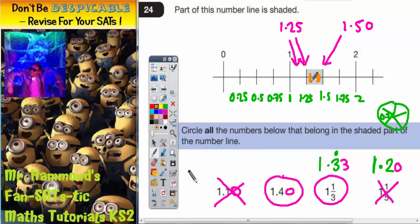First third would be about there. Second third would be about there. So 1.1 would be in the grey gap. 1.2 wouldn't.